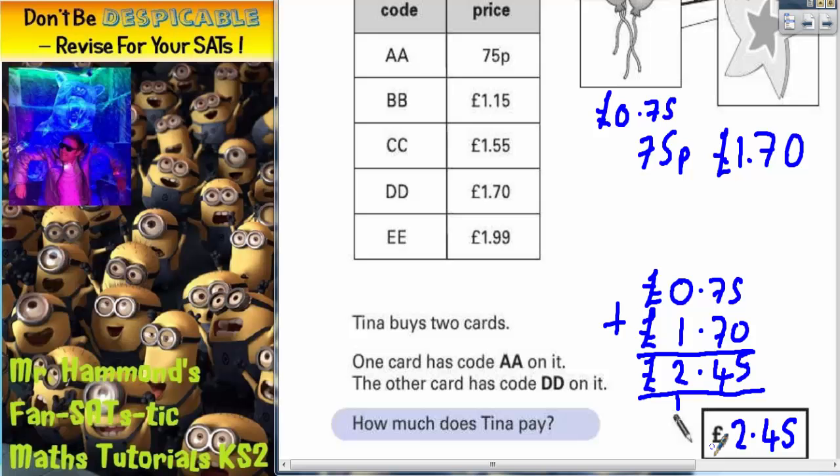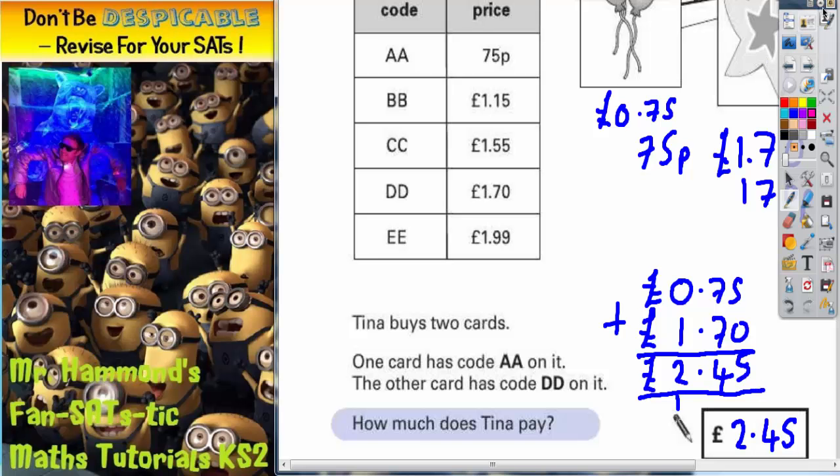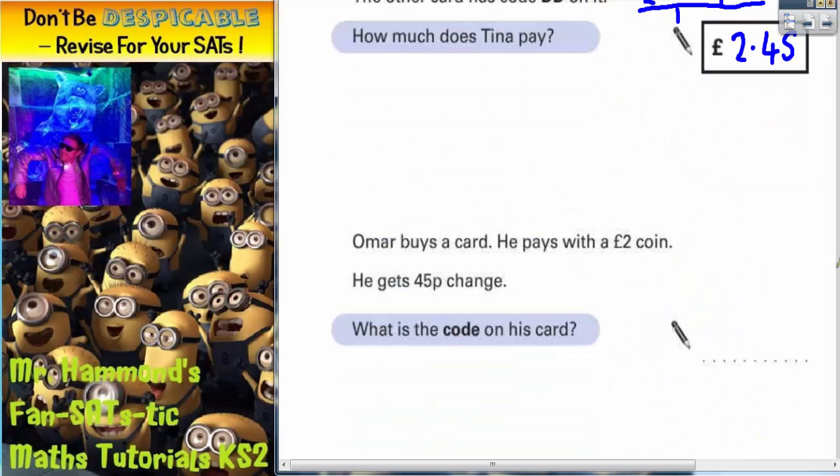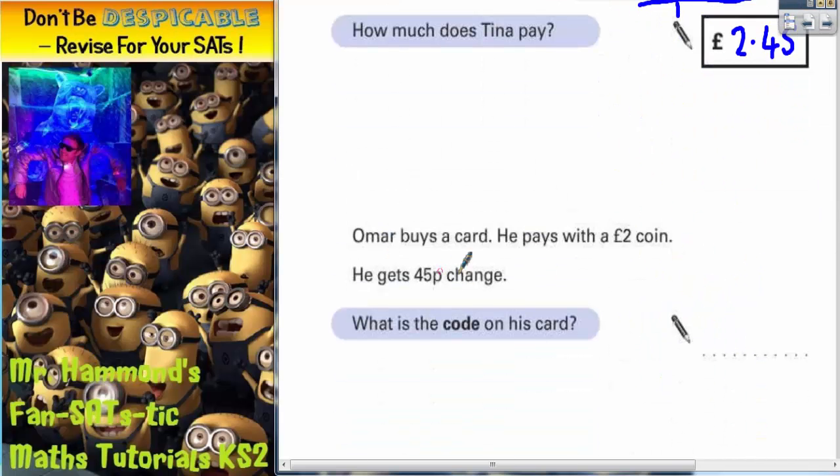We've got to give an answer in pounds because there is a pound sign in the answer box. So there's no point turning £1.70 into pence and working the answer out in pence because we've got to give our answer in pounds. Let's get a different color for part two of the question. This time it says Omar buys a card. He pays with a £2 coin. He gets £0.45 change. What is the code on his card? Well, if we take £0.45 off of his £2.00, we'll figure out what he actually paid.